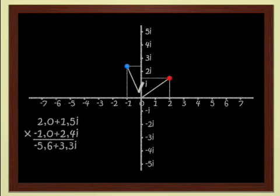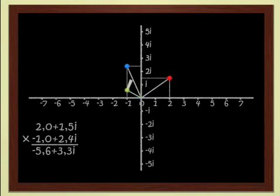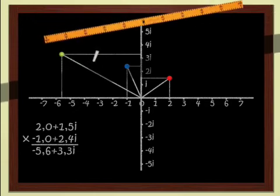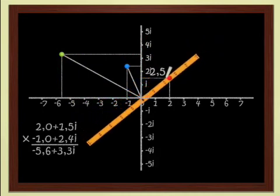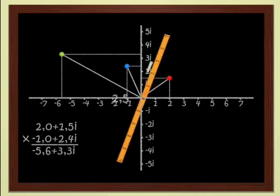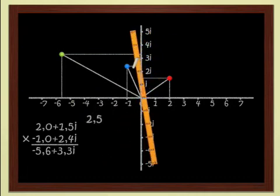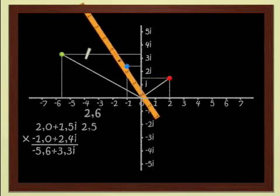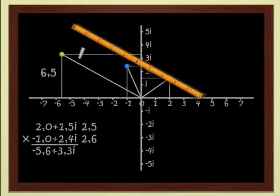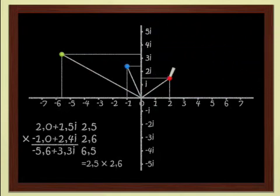It seems the right time to define two notions: the modulus and the argument of a complex number. The modulus of a complex number z is just the distance from the origin to the point that represents z in the plane. Let's use the ruler to determine the modulus of the red point, which is 2 plus 1.5i — it measures 2.5. The modulus of 2 plus 1.5i is therefore 2.5. The modulus of a product of two complex numbers is just the product of the moduli of the two numbers.